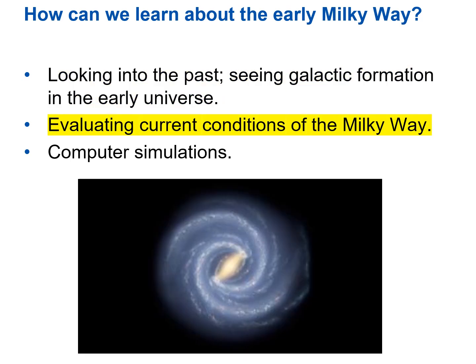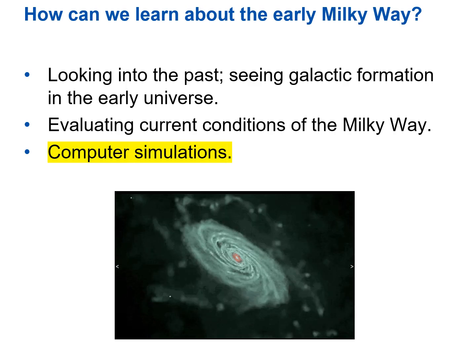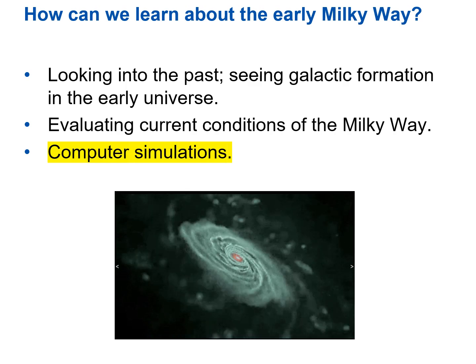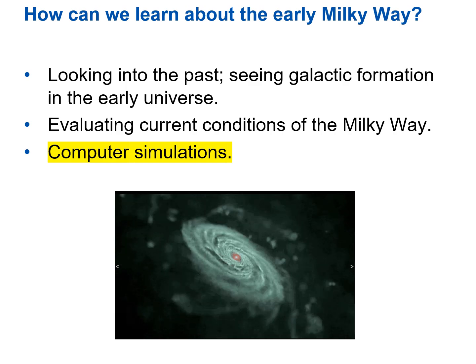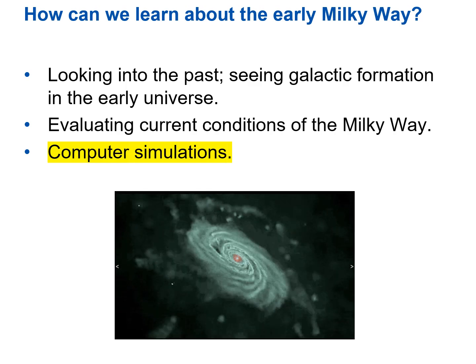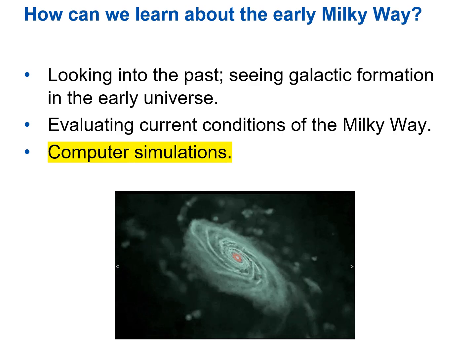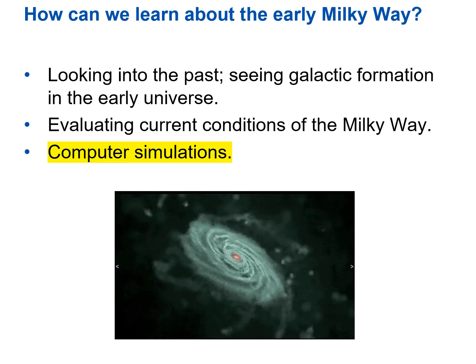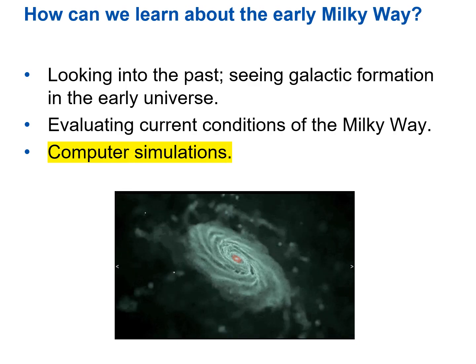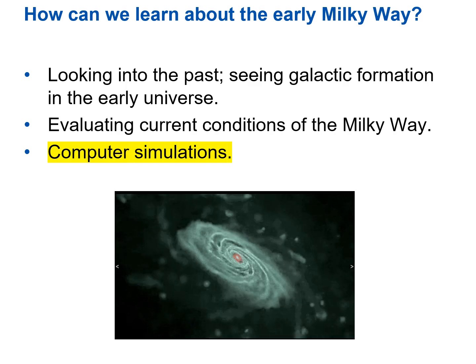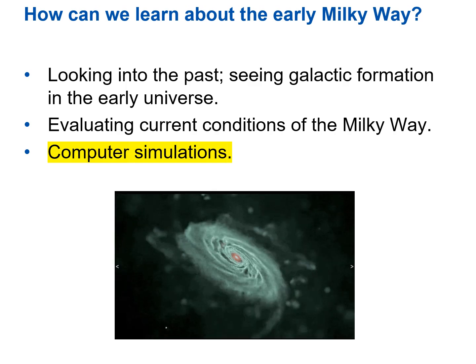We can also evaluate current conditions of the Milky Way. We see that our Milky Way has a central bulge, a disk with spiral arms, and a halo, and we can look out to galaxies far across the universe and see the formation of other such galaxies. We can also do computer simulations using the laws of physics — gravity, electromagnetism, fluid dynamics — and come up with simulations that show how a large cloud of gas could eventually become a galaxy like our own.